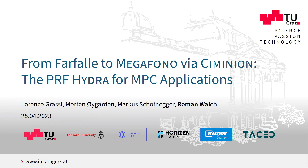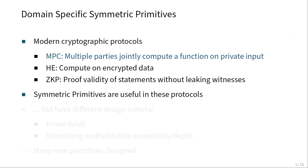Thank you for the introduction. In a recent decade or so, a new area of cryptography has become increasingly more important, namely the area where we can compute on encrypted or unknown data. For example, we have homomorphic encryption where we can directly compute on ciphertext, multi-party computation where a set of parties compute a function on their combined input without leaking anything about the private inputs, and zero-knowledge proofs where you can prove the validity of statements without leaking any witnesses. For all of these new protocols and primitives, we can construct use cases where symmetric primitives are used.